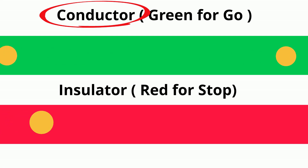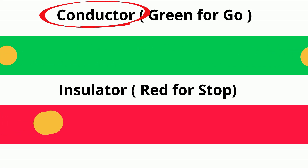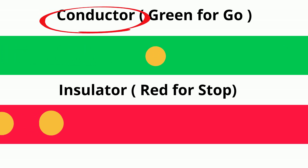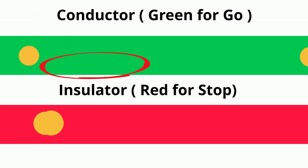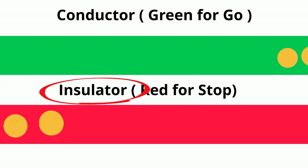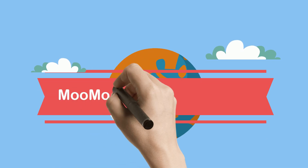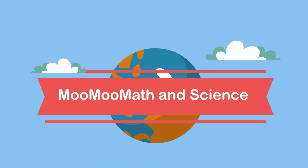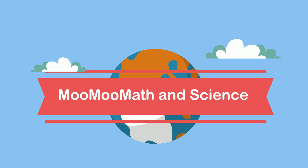A conductor is a material that allows negatively charged electrons to flow freely. An insulator is a material that restricts the flow of electrons. Welcome to Moo Moo Math and Science and a conductor versus an insulator.